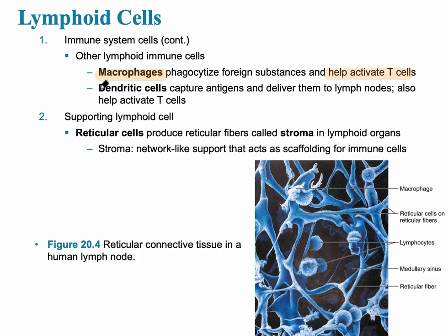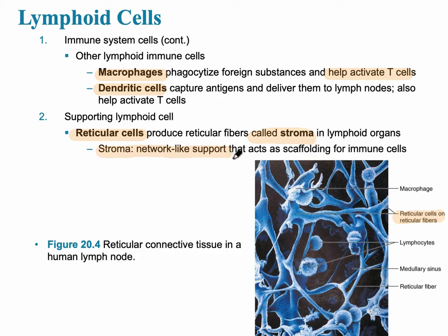There are also dendritic cells, which capture antigens and deliver them to the lymph nodes. The last supporting cell is more of a structural cell found in the connective tissue, referred to as reticular cells on the reticular fibers. These help to form a stroma, a spider-like network structure that acts as scaffolding to help catch bacteria, microbes, and antigens so the immune system can act on them.